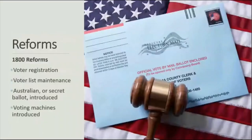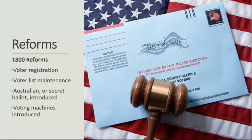There were several reforms in the 1800s to prevent state and party corruption in voting. Citizens had to register to vote, states were required to maintain voter lists, the Australian or secret ballot was introduced, and voting machines found their way into our electoral process.